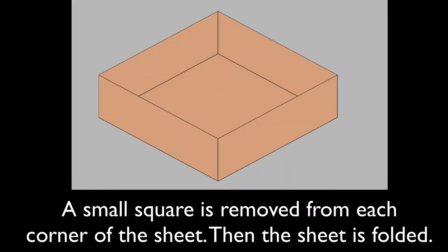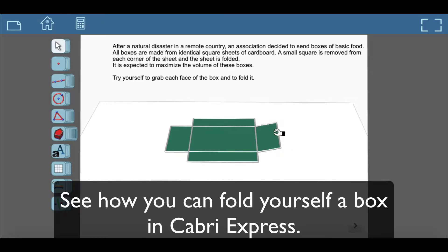A small square is removed from each corner of the sheet. Then the sheet is folded. See how you can fold yourself a box in Cabri Express.